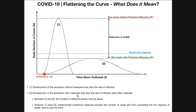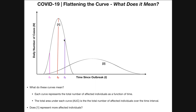Before going further, what do these two curves even mean? Each curve represents the total number of affected individuals as a function of time. At a given time point, you can look at the curve and see how many people were affected that particular day. You can see that more individuals were affected on the day represented by T3 than on the day represented by T1. On the day represented by T2, that was when the maximum number of infections took place. So each curve simply shows the number of affected individuals as a function of time.